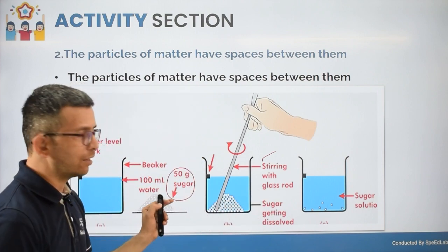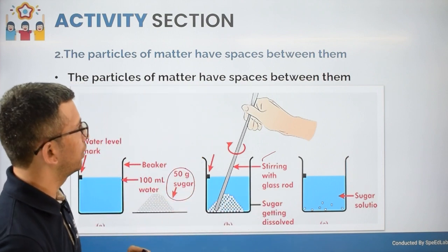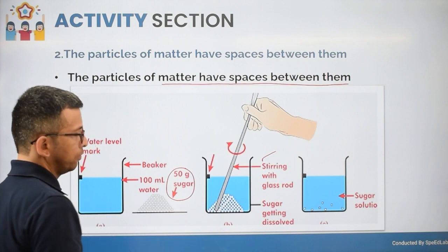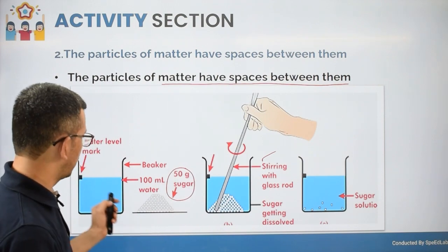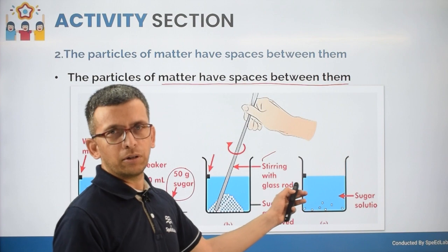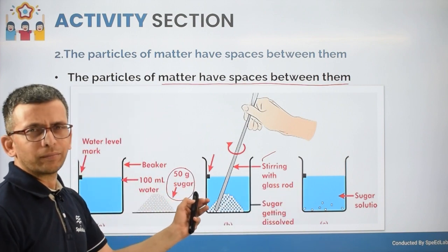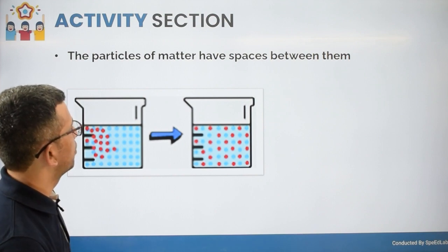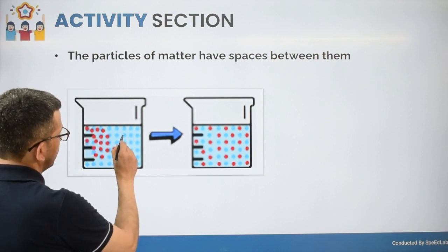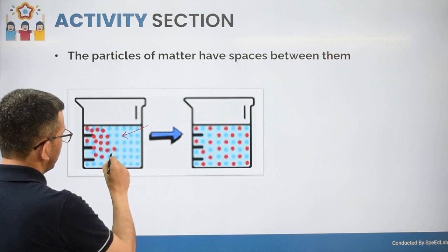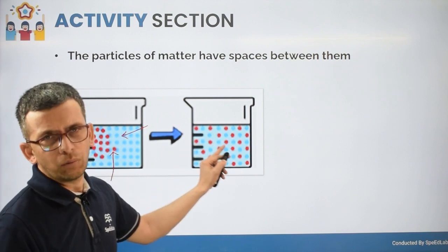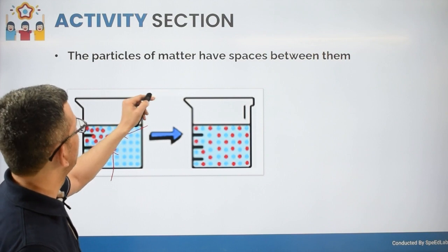This activity clearly indicates that matter has spaces between particles. You can take another example — salt also dissolves completely in water, just as sugar does. In the diagram, blue represents water molecules and red represents sugar molecules. The sugar molecules fit into the spaces between water molecules, confirming that particles of matter have space between them.